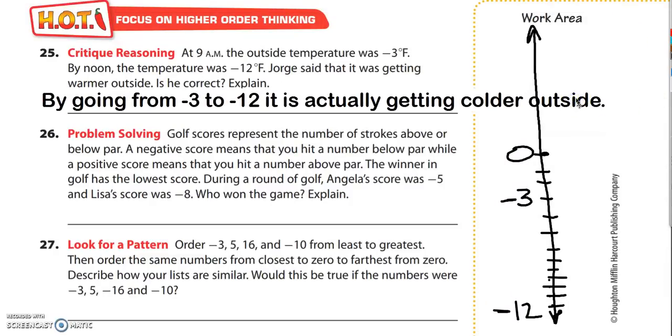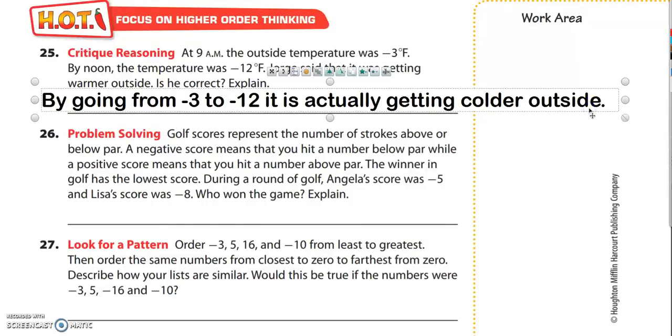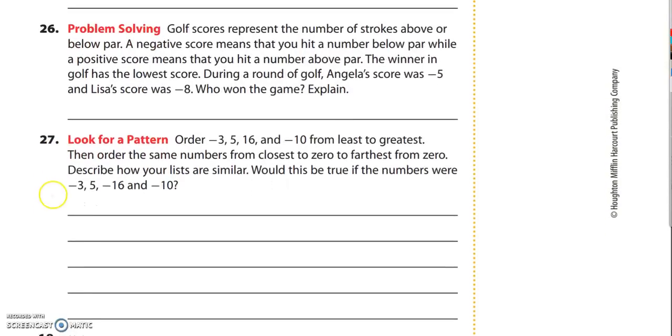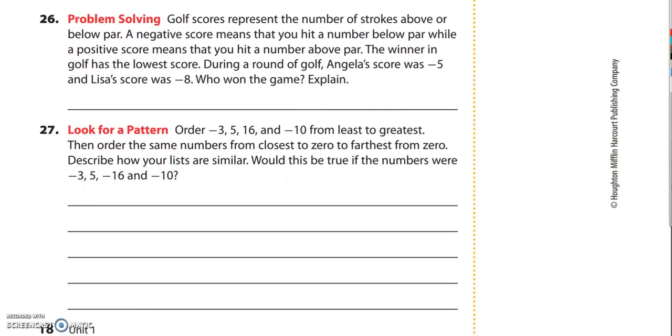All right, let's go ahead and check out 26 and 27. 26 reads golf scores represent the number of strokes above or below par. A negative score means that you hit a number below par while a positive score means you hit a number above par.